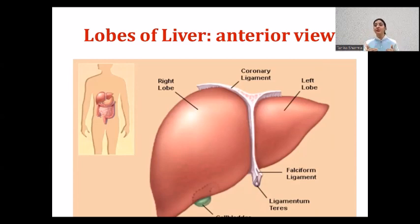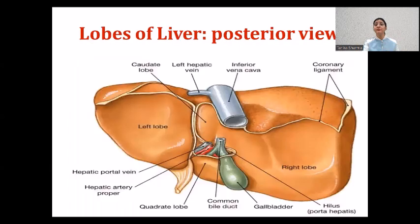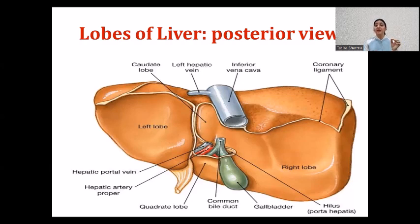From the anterior view, the liver shows two lobes — right and left — divided by the falciform ligament. When we look at the liver from the posterior viewpoint, we can see two more lobes: the caudate lobe and the quadrate lobe. So in total, the liver has four lobes: the right lobe, the left lobe, the quadrate lobe, and the caudate lobe.